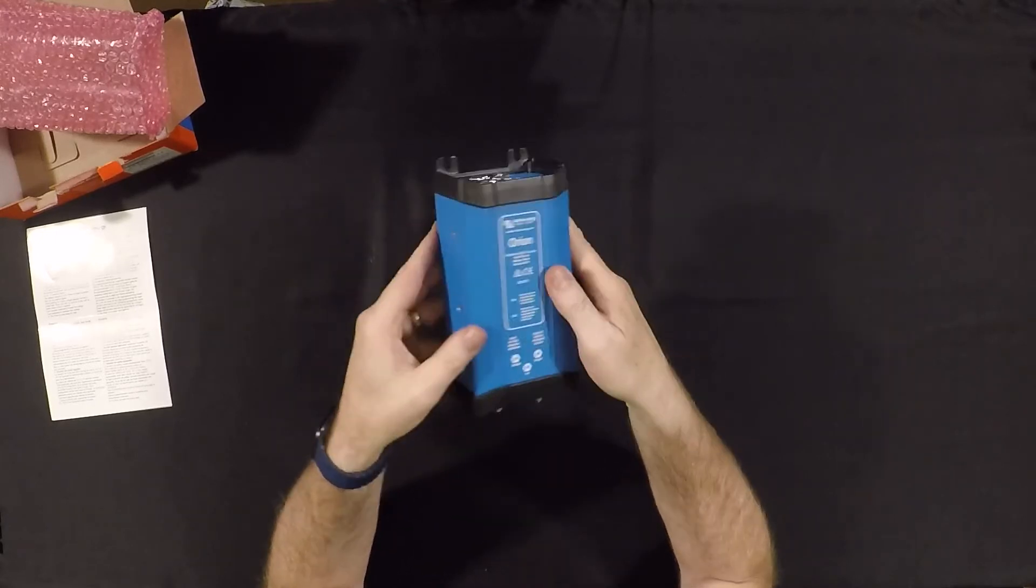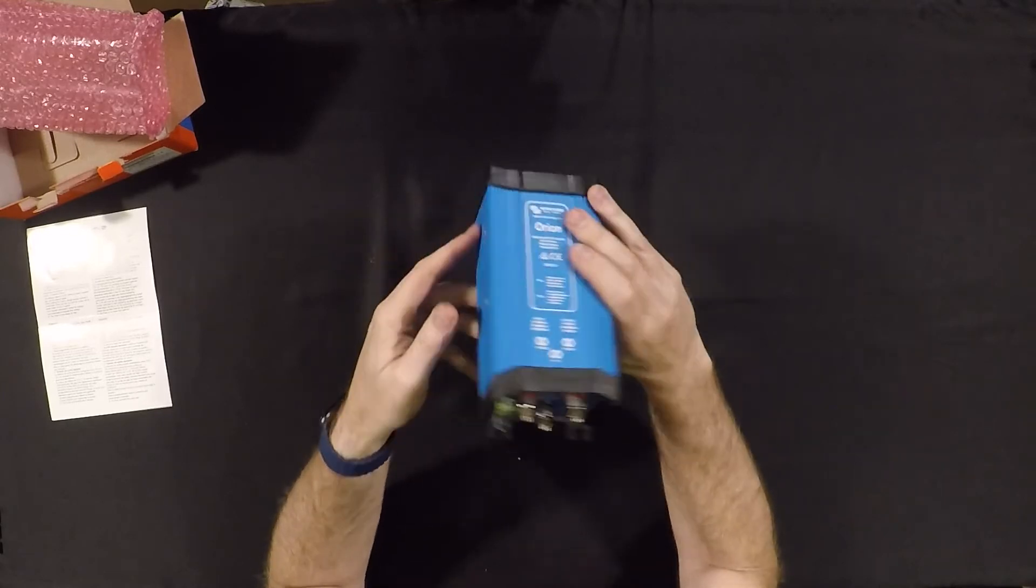So you might ask, you already have one of these, why are you getting another one? Well, the truth is I probably don't need a second one. However, seeing as the 12 volt system in my rig is obviously so important, everything in the rig that runs on DC runs on 12 volts right now, this is technically a single point of failure. Now in a traditional rig where you've got multiple batteries, if one of your batteries dies you still have another battery to provide some power, right?